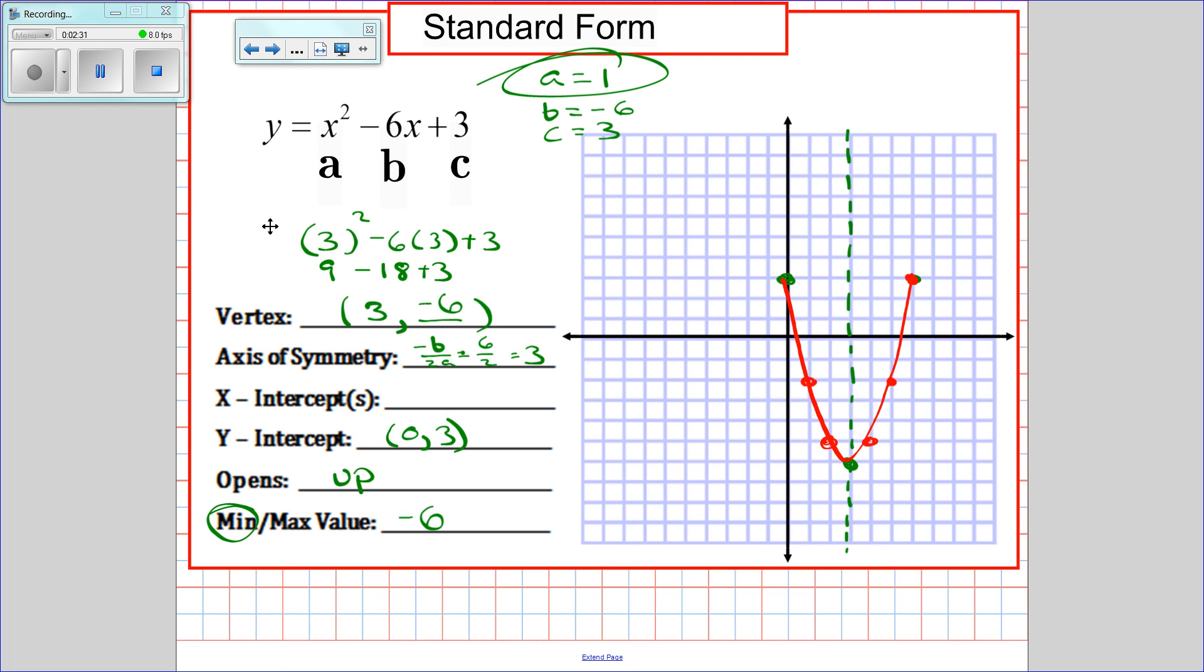Now for my x-intercepts, I know I'm going to have 3 plus or minus something as my x-intercepts. That's the 3 from the axis of symmetry and the plus or minus is just the difference. I know that my x-intercepts have to be between 1 and 2 and between 5 and 6. So I plug those into the quadratic formula and I get the answers.